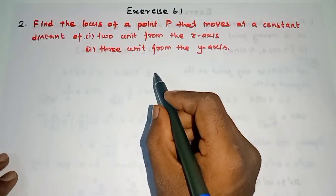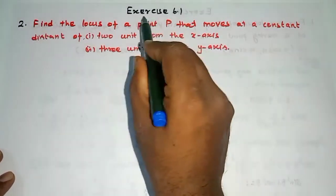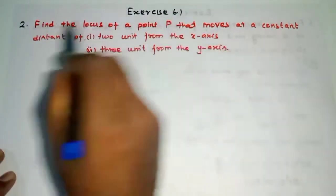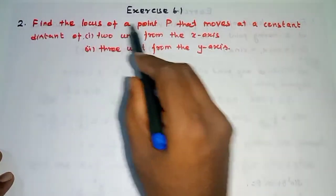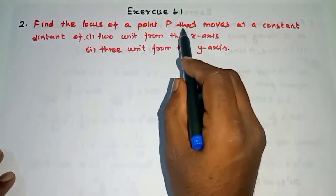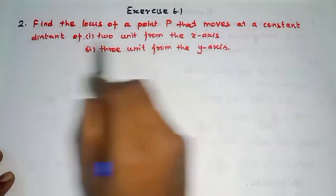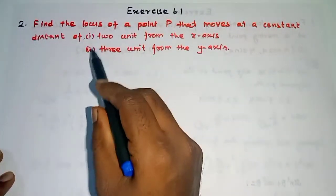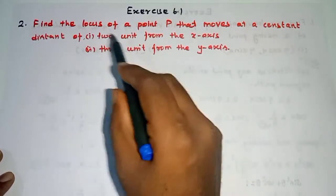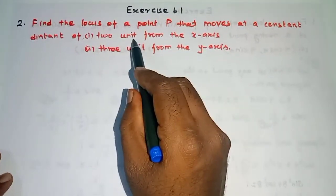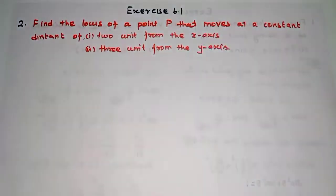Hi student, this is Silamamax tuition, 11th standard, XI 6.1, question number 2. Find the locus of a point P that moves at a constant distance. Sub-question 1: 2 units from the x-axis.